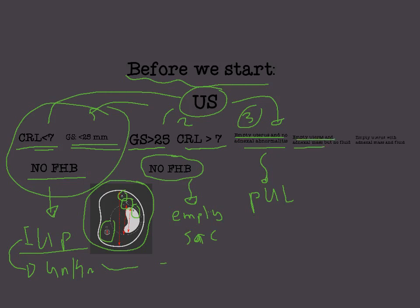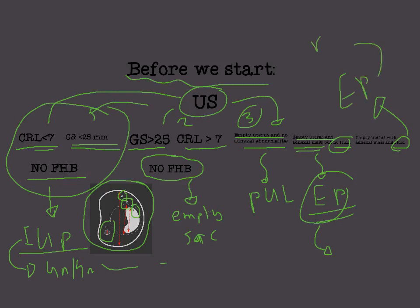What if we see an empty uterus with an adnexal mass but no fluid? An empty uterus means no visible viable pregnancy in the uterus, but an adnexal mass indicates an ectopic pregnancy. Is it ruptured? No — because there is no fluid. If the ectopic pregnancy ruptures, it drains fluid. So an empty uterus with adnexal mass and no fluid means an unruptured ectopic pregnancy. If there is fluid with the adnexal mass, then the ectopic pregnancy is ruptured.